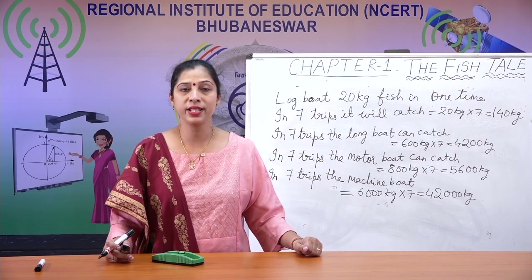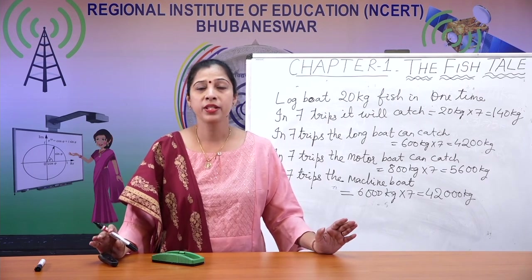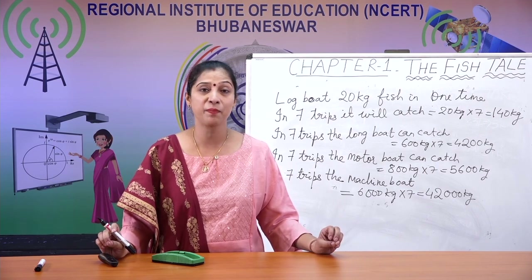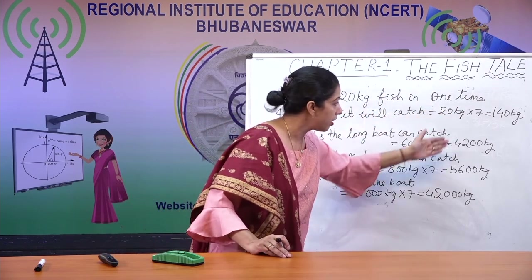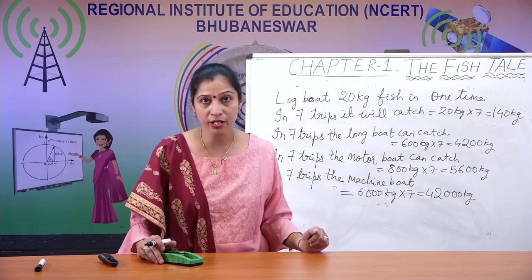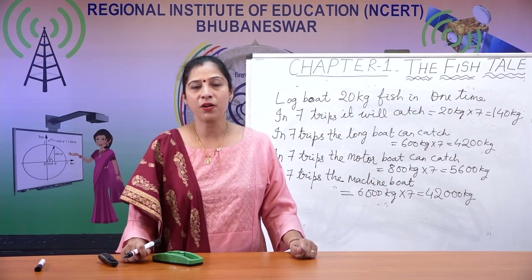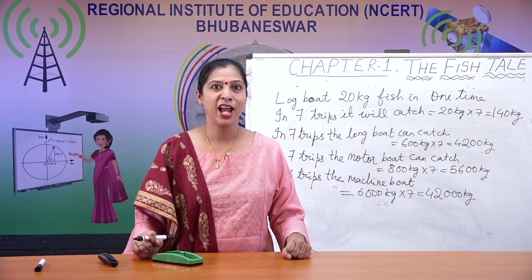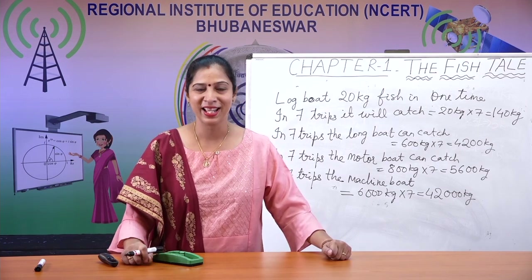Now you understand how to do this. As humans, we need to find a solution for the problems created by our greed — you have seen the huge difference in kilograms of fish caught by different boats. In the next class, we will see how fish is sold in the market, what profit can be made, and what a fish market looks like. Thank you so much.